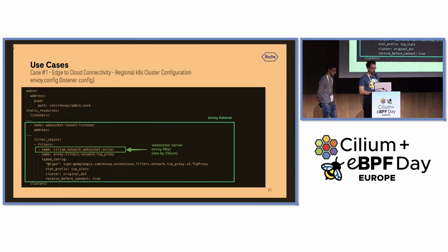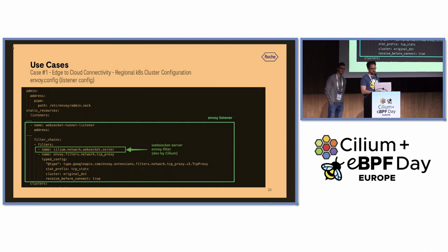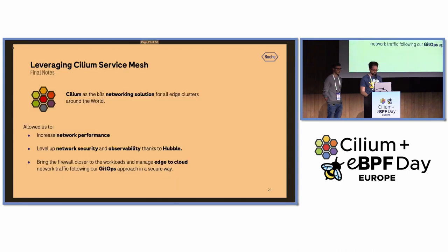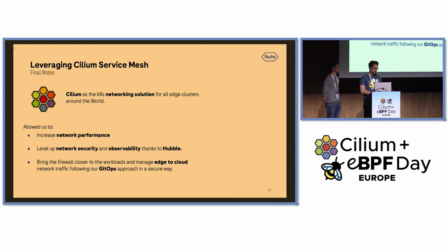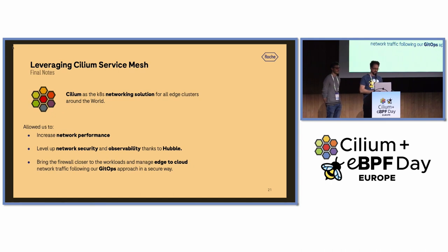The server Envoy config corresponds to the WebSocket termination running in our EKS regional clusters. There we use the WebSocket server Envoy filter, which performs the WebSocket termination and decapsulation of the original request. With this migration, all our edge clusters are now running Cilium. We increased network performance, leveled up network security and observability with Hubble — a tool part of the Cilium family — and brought the firewall closer to our workloads to manage edge-to-cloud network traffic following a GitOps approach in a secure way.